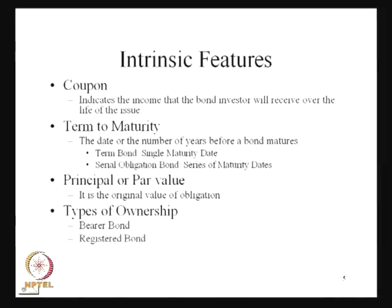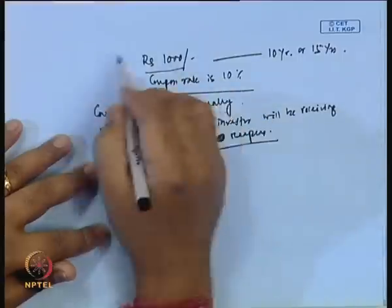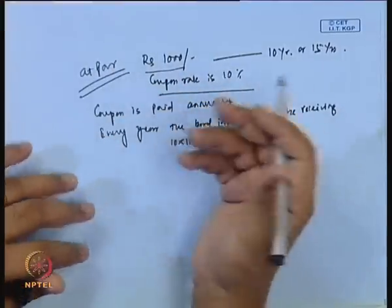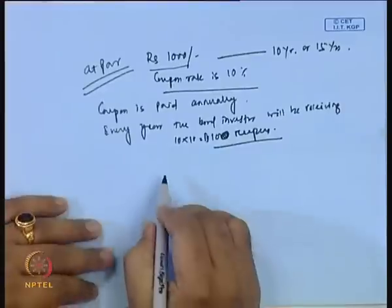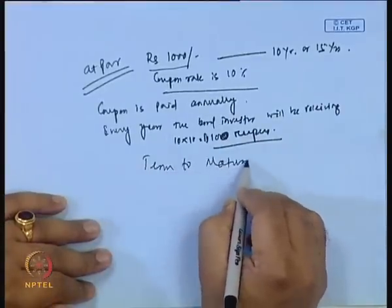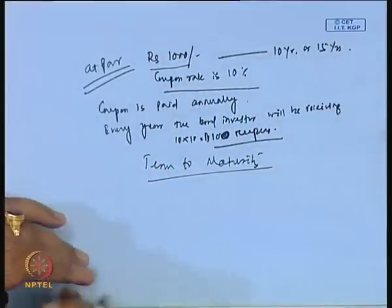Another feature is the principal or the par value. Always remember, this bond has been issued at par. That means there is a par value of the bond — it is basically the original value of the obligation. This much money or this much rupees you have to get after a certain number of years, and that certain number of years is basically defined as the term to maturity. For example, the particular value of the bond you should receive — that 1000 rupees — after 5 years or 10 years. So the 5 years or 10 years or 15 years is defined as term to maturity, and the amount you are going to receive at the end is defined as the par value or the principal value of this particular bond.